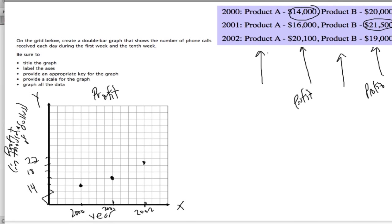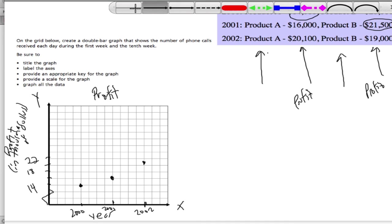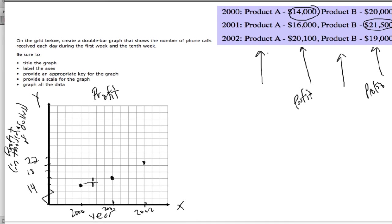And then what we do is connect those dots with a line, which is why it's called a line graph. Make sure you use a ruler. See how this is a little bit sloppy. You want to fix that. So that's our plot for product A. And you can label it by writing an A next to it.